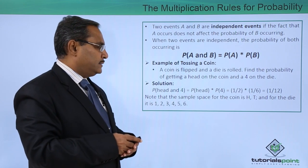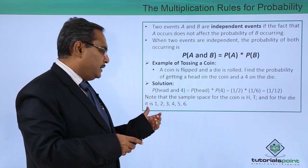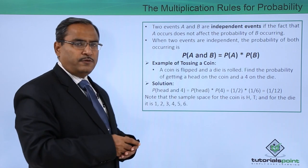Note that the sample space for the coin is {head, tail} and for the die it is {1, 2, 3, 4, 5, 6}.